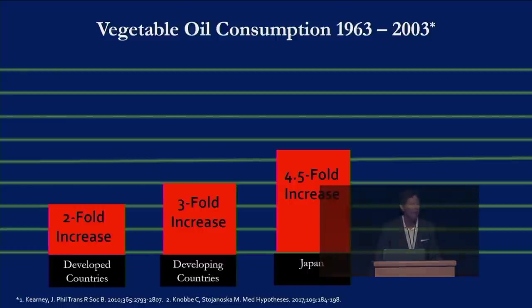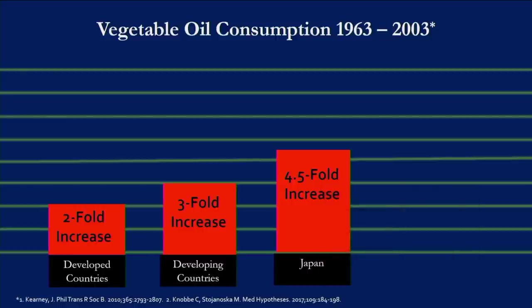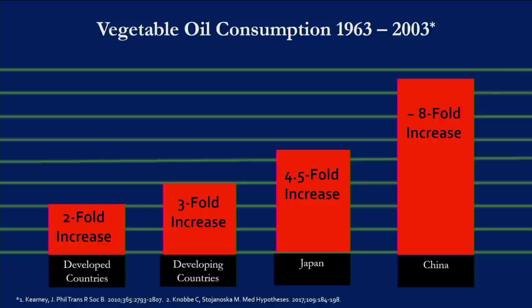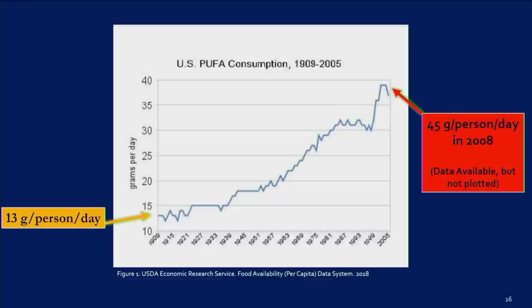Japan saw a four-and-a-half-fold increase in vegetable oil consumption in that period, and China saw almost an eight-fold increase. The Asians are getting sick just as we are. PUFA consumption — omega-6 and omega-3 together — rose from 13 grams a day in 1909 to 45 grams a day by 2008, according to our own USDA. That's more than a tripling of our PUFAs.